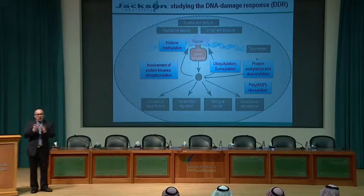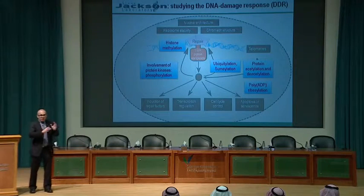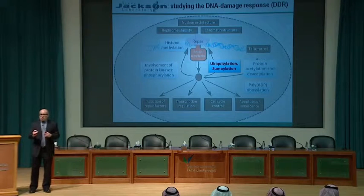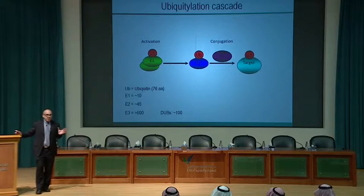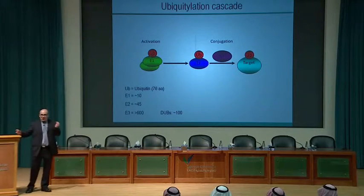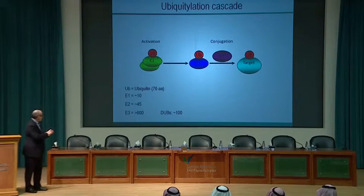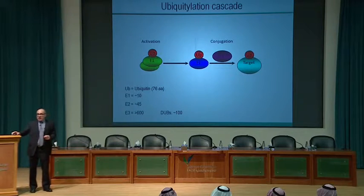Over the last few years, in addition to protein kinases, my lab has been studying other modifications — particularly ubiquitylation and SUMOylation. Ubiquitin is a 76 amino acid protein covalently attached to target proteins, often through lysine residues. Ubiquitylation occurs through a cascade of E1, E2, and E3 enzymes. There are more proteins involved in ubiquitylation than in controlling phosphorylation, and it has the potential to be even more biologically important.